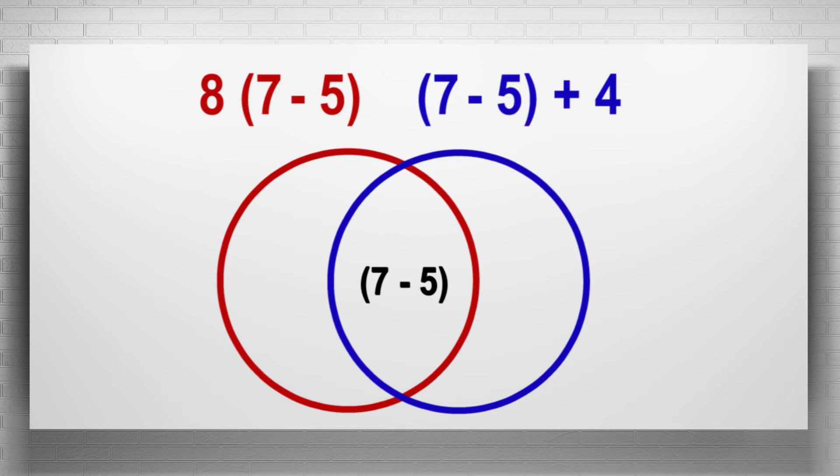Using a Venn diagram, we can identify the difference of 7 and 5 as the common element in each expression. Notice in this example, each expression has a unique element. The expression on the left is multiplied by 8, while the expression on the right is added to 4. We represent them in our diagram by placing each on the corresponding side.